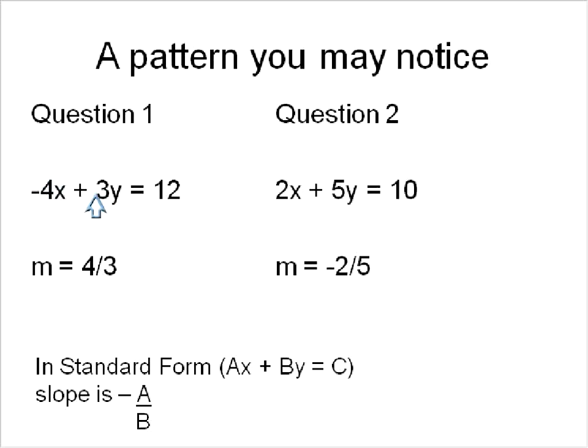But negative a over b in the standard form of equation. So this 4 over 3, and we had actually negative 4 over 3, and we took the opposite of that, or the negative value of that, negative times that, will give us a positive 4 over 3.